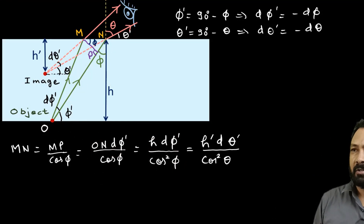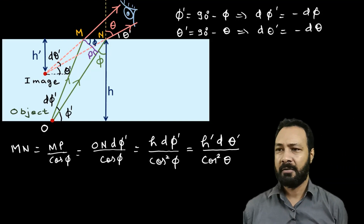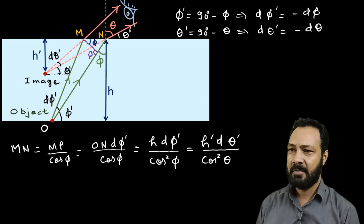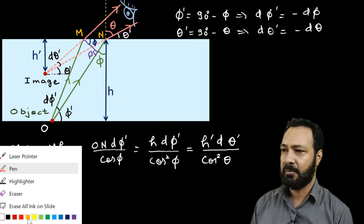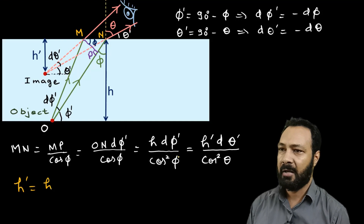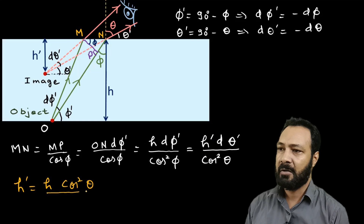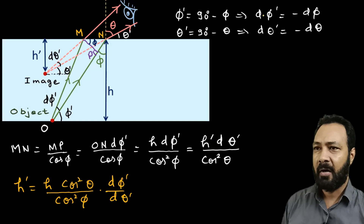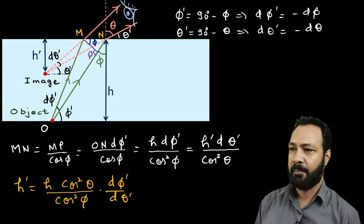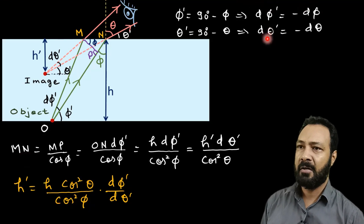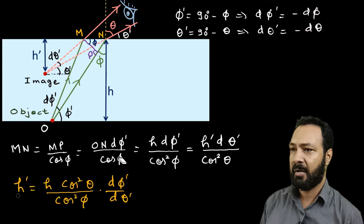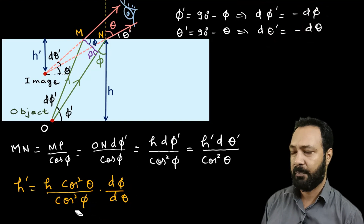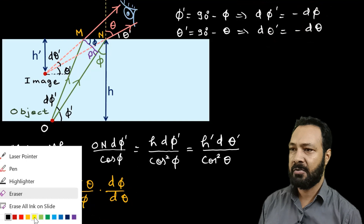Using h to get h-dash, and theta to get theta-dash and phi-dash and theta-dash, I will derive h-dash. So h-dash equals h multiplied by cos²(theta) divided by cos²(phi), multiplied by d(phi-dash) divided by d(theta-dash). Now since d(phi-dash) = −d(phi) and d(theta-dash) = −d(theta), this simplifies: d(phi-dash) / d(theta-dash) = d(phi) / d(theta). So h-dash = h · cos²(theta) / cos²(phi) · d(phi)/d(theta).